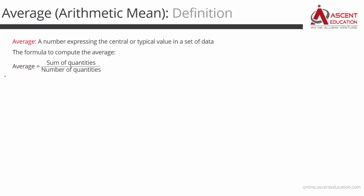The more important thing is how do you compute average? Average for a set of quantities will be the sum of the quantities divided by the number of quantities. In the entire topic, in this one concept, this is the same.